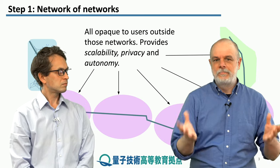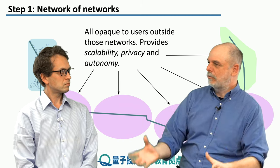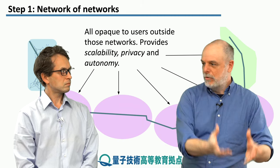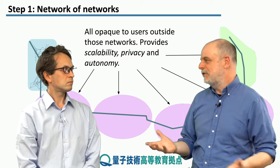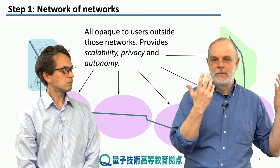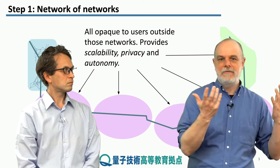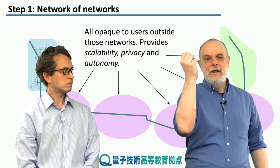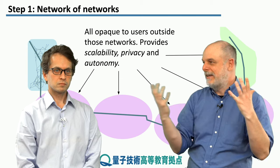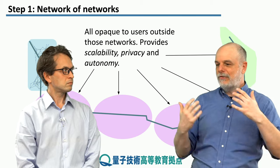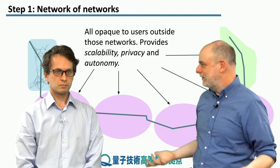It's also true that the people who own networks want to be able to evolve what's inside the network at their own rate, using potentially their own choices of technology. They don't want to share that information outside for business reasons, privacy reasons, competitive advantage reasons, or whatever. And this gives a certain amount of autonomy. You have to know how to get across your own network to the gateway, and then the gateway has to know which network to send things to next, but it doesn't have to know anything about the inside of those networks.